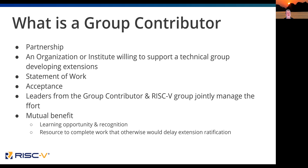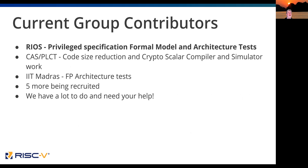We develop a statement of work with acceptance criteria, and there's a leader from the group contributor as well as from the RISC-V group — they jointly manage the effort. There's mutual benefit: it's a learning opportunity and there's recognition, which helps group contributors. On the RISC-V side, we get resources to complete the work that otherwise would have delayed the extensions. Right now we have three groups working on proof of concepts. Our hosts here, RIOS, have picked up a very difficult thing — the privileged specification formal model and architectural tests. We're making good progress and we're very excited about it.